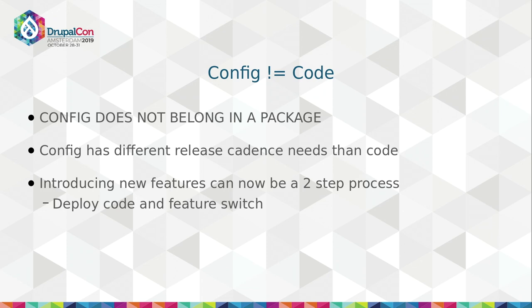This one was important enough to put in caps: config does not belong in a package. Config has a different release cadence from code. For instance, if I want to change my config on production, I don't want it in the original artifact, because then I need to promote it all the way through to production without any benefit to the underlying environments. By separating your config from your code, you also have built-in opportunities to do canary testing, A/B testing, and deploy with a feature switch — making it a two-step process. Deploy your code, then deploy your config. When you're ready to toggle feature X, you deploy a new config. This is much quicker than doing full deploys. Full deploys involve bigger artifacts that take longer to propagate through your network, whereas config is mostly text files — KBs versus MBs or even gigabytes.